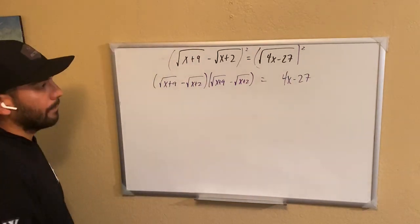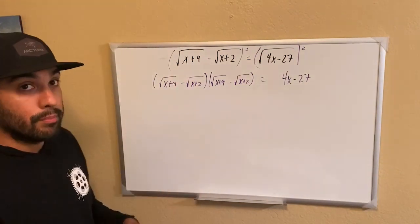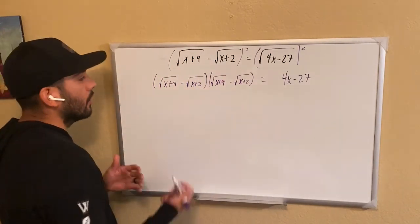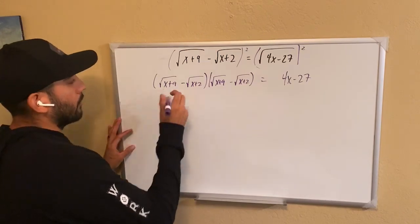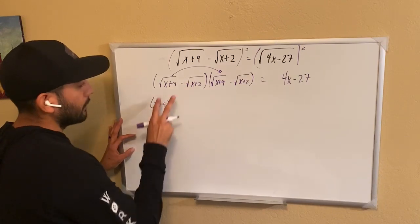Okay, now how do we multiply? A lot of people are going to call this the FOIL method, but it's really called distribution property because you're distributing everything to each value. But again, we're just going to use the FOIL method. I'm going to multiply the first values. That's just going to become x plus 9 because the radicals are the same.